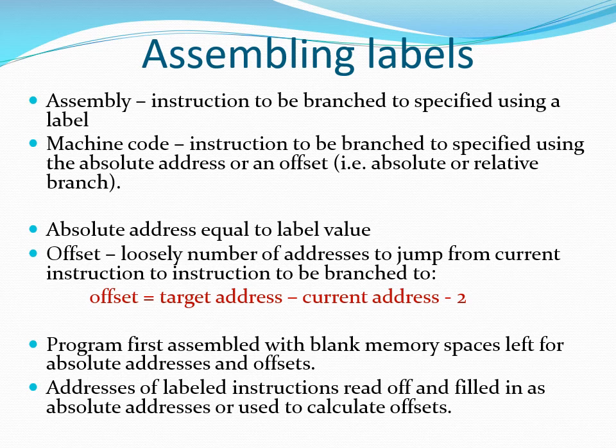The target address is the address of the instruction we want to branch to. The current address is the address of the instruction that is causing the branching. The value 2 is included to accommodate the program counter, since it would have changed after fetching the current instruction — for relative branch instructions, the program counter would have been incremented by 2.